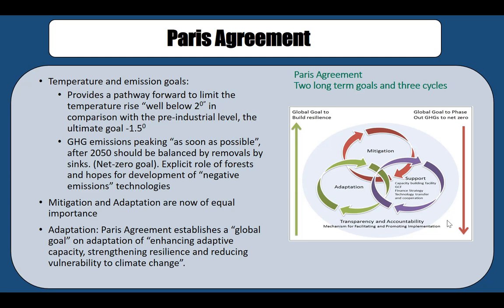The main objective of the Paris Agreement is to keep global temperature below two degrees Celsius above pre-industrial levels. As noted in previous lectures, two degrees Celsius is a critical inflection point beyond which we risk irreversible climate damage, so the agreement aims to keep warming preferably below 1.5°C. This requires reducing emissions and increasing greenhouse gas sinks to reach net zero.